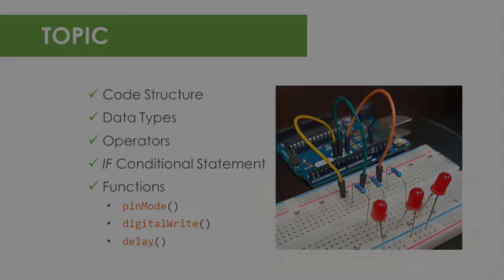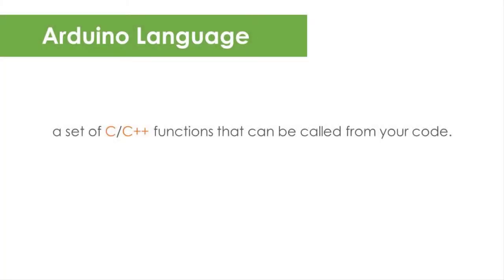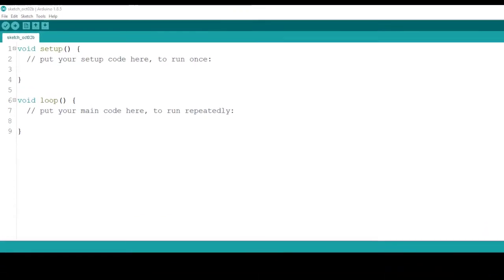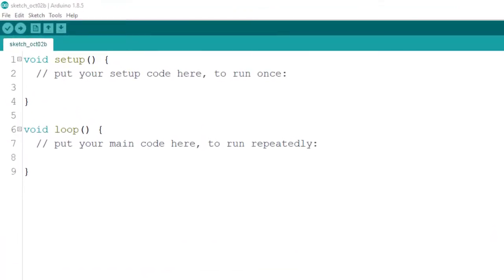So let's begin. Arduino language is simply a set of C and C++ functions that can be called from your code. So if you have a programming background in C, C++, or related languages like Java or C#, it will be very easy for you to adapt to Arduino language. When you open a new file in Arduino IDE, you will have this initial code structure to start your program. It consists of two main functions: void setup and void loop.